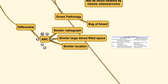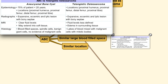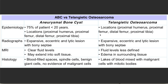For the ABC as a differential diagnosis, they have very similar radiographs with similar large blood-filled spaces, and their lesion location is also quite similar to the teleangiectatic type. A comparison table summarizes the differences across epidemiology, radiographs, MRI, and histology. ABC usually has blood-filled spaces but with no evidence of malignant cells on pathological report, while in the teleangiectatic type you would see malignant cells with mitotic bodies.